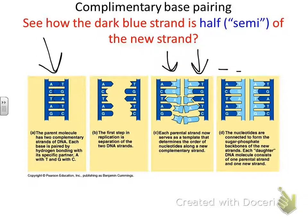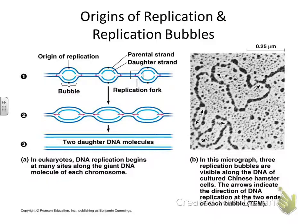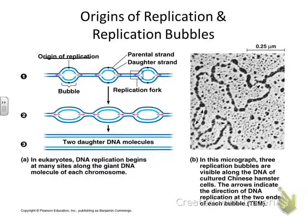The replication work is being done in opposite directions. You can see here that one arrow is pointing this way and the other arrow is pointing that way. The origin is the starting point — the origin of replication. It's moving in opposite directions, replicating in multiple places, getting bigger, until you have two complementary strands.